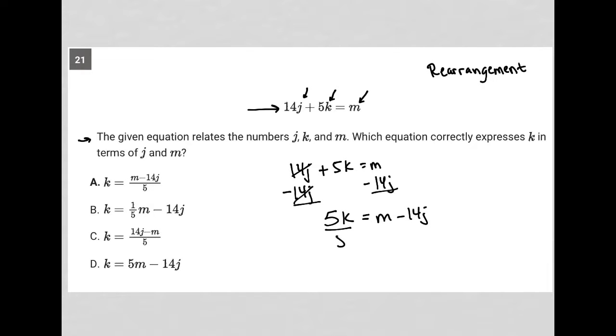And then lastly, I want to divide by 5. So I'm going to divide everything by 5 here, so that I have k alone.